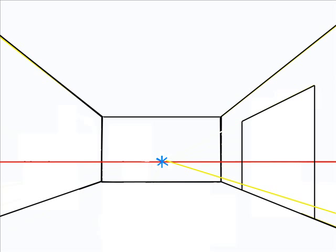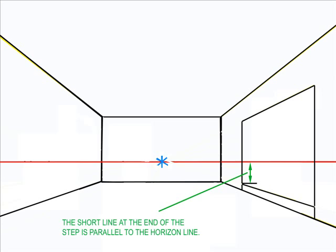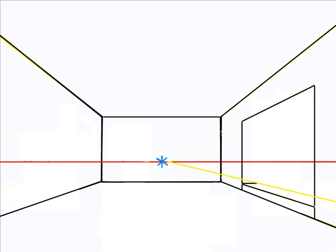Then I line my triangle up with the vanishing point to figure out the first step. Then I make a short line at the end of that step parallel to the horizon line. From the end of that short line, I line it up to the vanishing point.